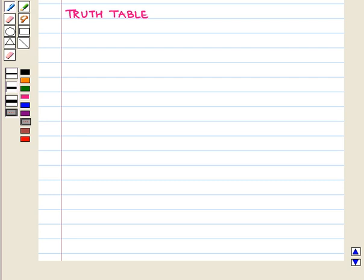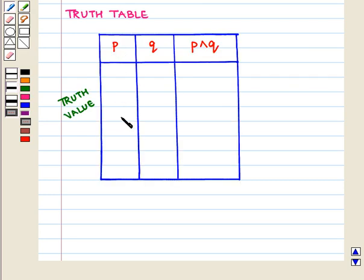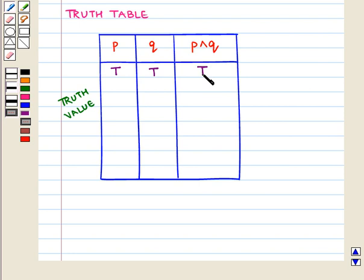Now let us write its truth table. In the first column, we write the truth values of P. In the second column, we write the truth values of Q. And in the third column, we write the truth values of P and Q. If P is true and Q is true, then P and Q is also true. If P is true and Q is false, then P and Q is false. If P is false and Q is true, then P and Q is false. And if both P and Q are false, then P and Q is also false.